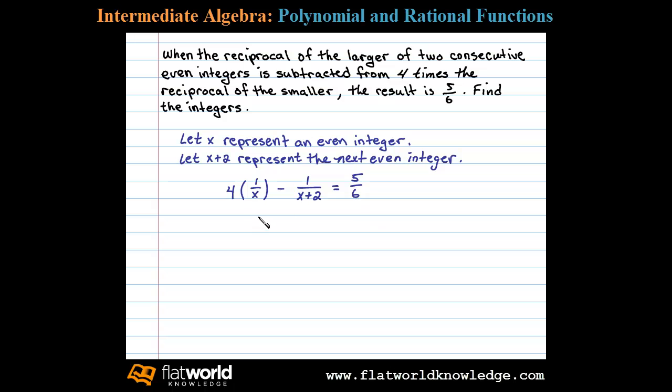And so this is our setup. We can write four times 1/x as 4/x. And we have 4/x minus 1/(x+2) equals 5/6.